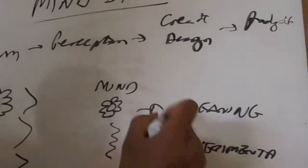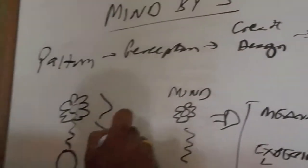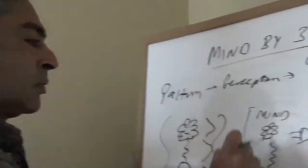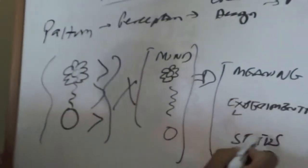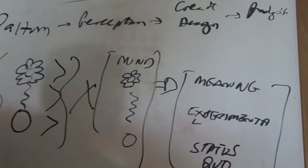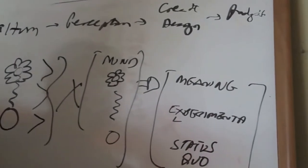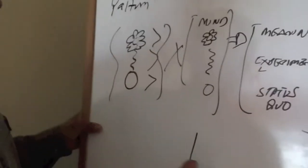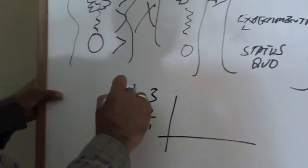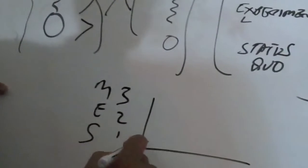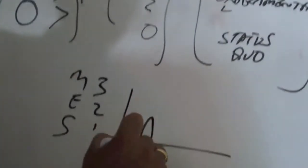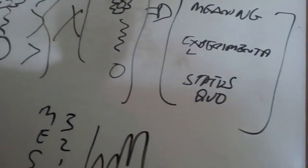And here, essentially what you have is through this multiplication of this pattern with the mind, you have three different modes of operation of the mind. Now, the thing is that these modes of operation are not necessarily ordered. In fact, if you graph it out, what you will see is that oftentimes, if you take the three areas—the meaning, the experiment, and the status quo—and any one person's operation of the mind, there might be a lot of variation. In fact, being stuck in one area or the other.